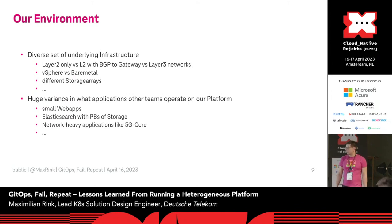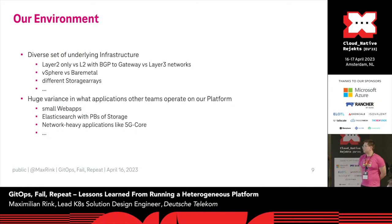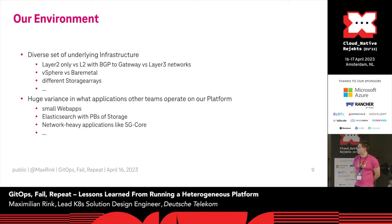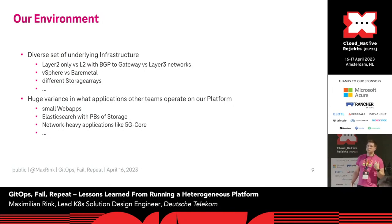Our environment is quite diverse. We have sites with very different networking architectures — some with just layer-2 networks and classical switches with VLANs, some with BGP to the data center edge, and modern sites with layer-3 only, where everything is BGP-EVPN. We also have different underlying infrastructures: vSphere on one hand, and bare-metal clusters on the other. For storage, we have very different providers depending on which data center you're in — vSphere CSI, Pure Storage, NetApp, and a few others.